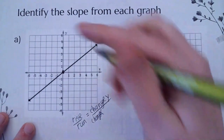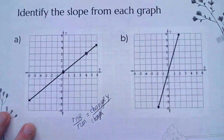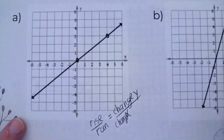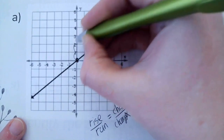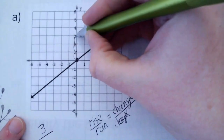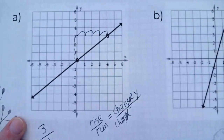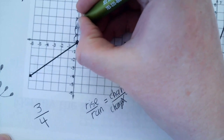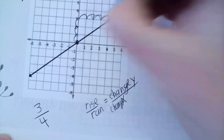We have a point here and another point right here. We're going to go up and over. We went up 1, 2, 3 — so our top number is 3. And we went over 1, 2, 3, 4. So my slope is 3 over 4 because I went up 3 and over 4. That's rise over run.